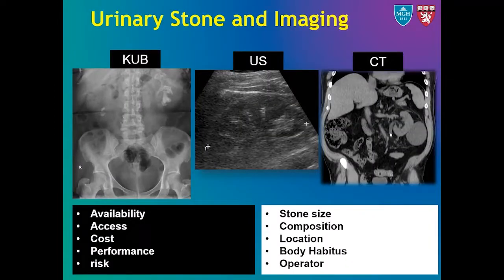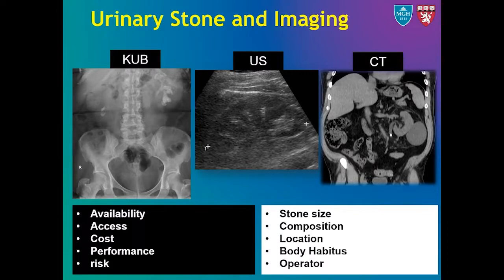Coming to the role of imaging, they have a central role in the diagnosis of urinary stones. The various modalities include plain radiography, ultrasound, and CT. Plain radiography has a limited role in evaluation of stone disease as it's not a sensitive modality because many stones are not radio-opaque, and many radio-opaque stones are easily obscured by bowel content. However, they do have utility in treatment planning, particularly shockwave lithotripsy, and are helpful in post-treatment evaluations such as looking at ureteral stent placement and estimation of residual stone burden.